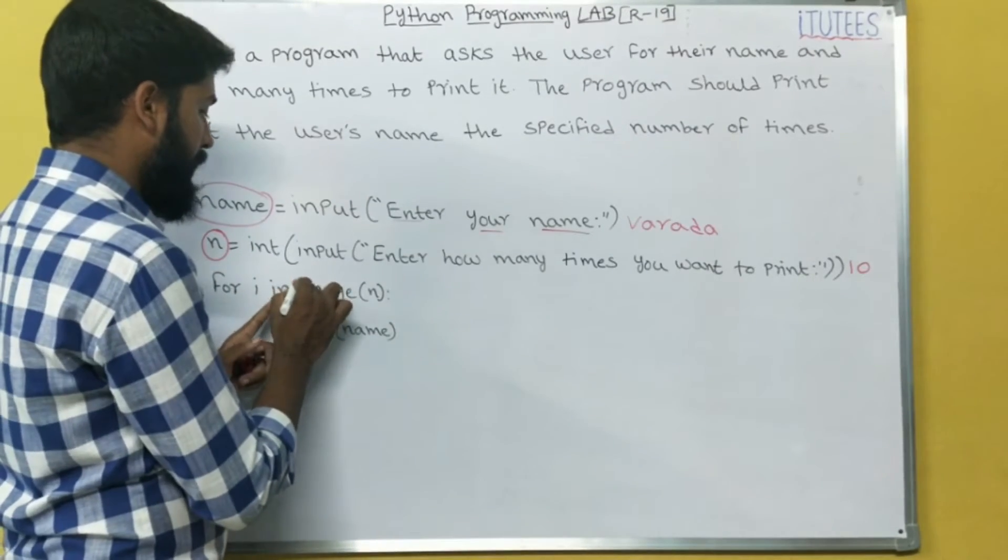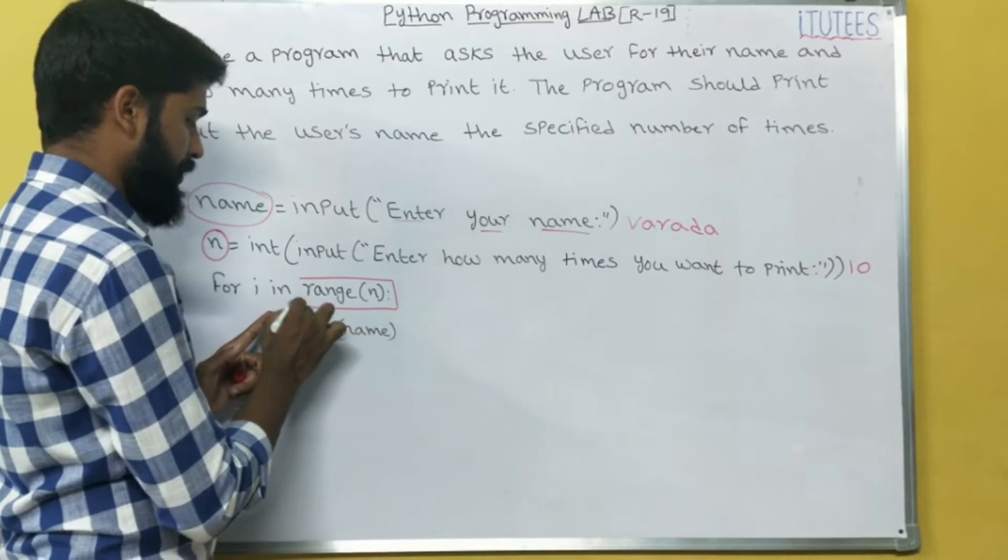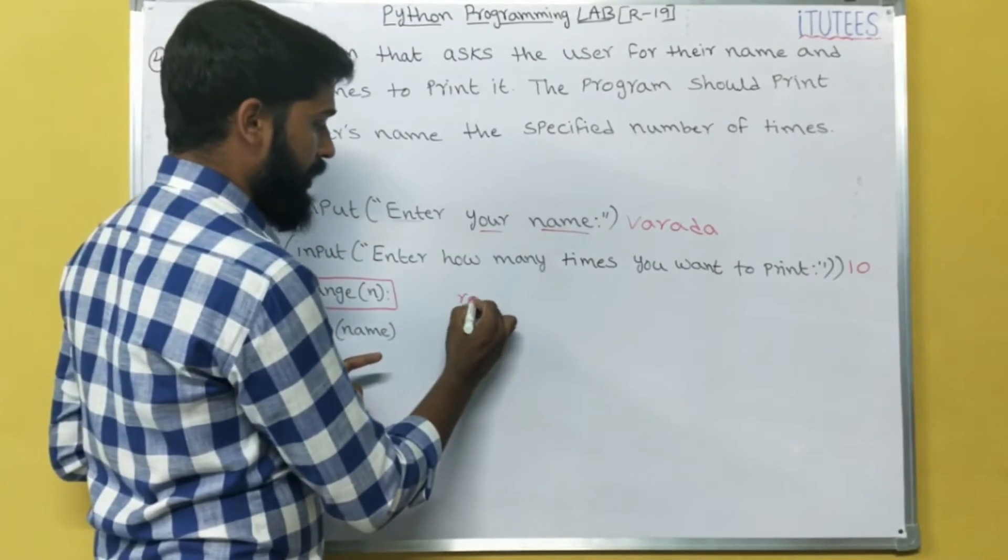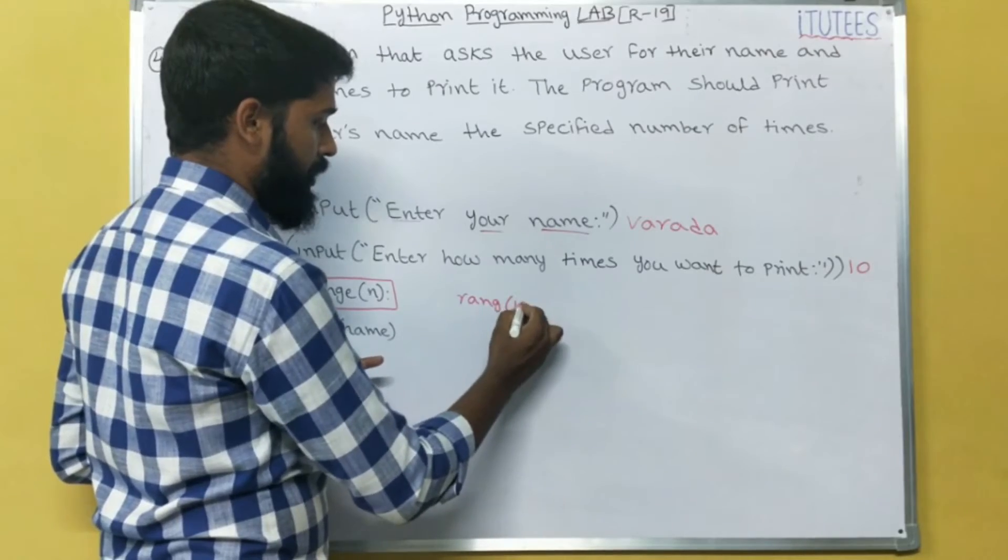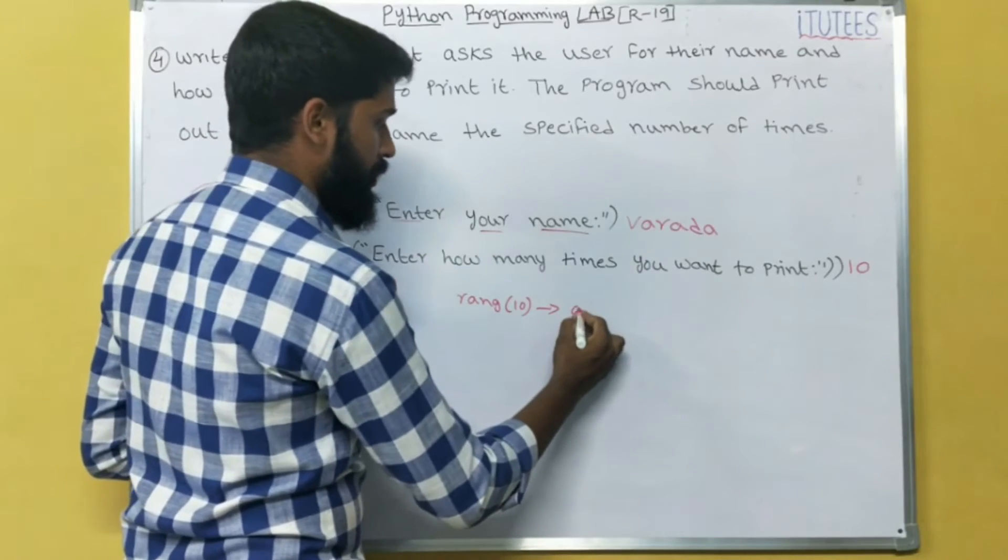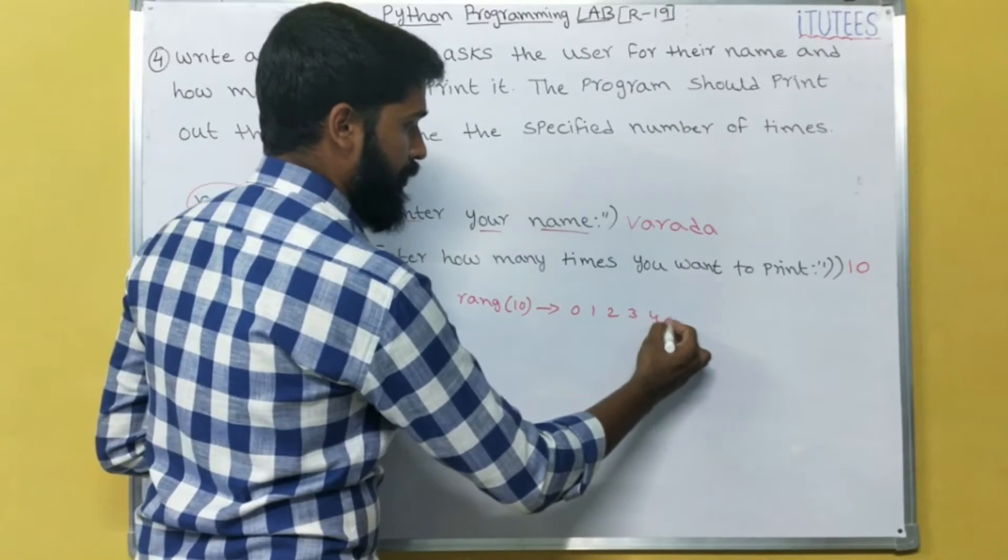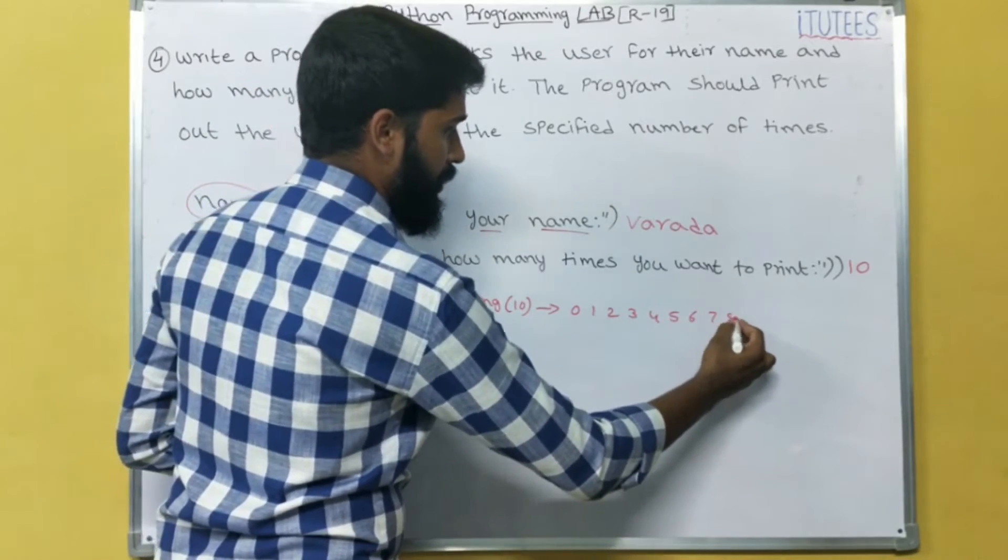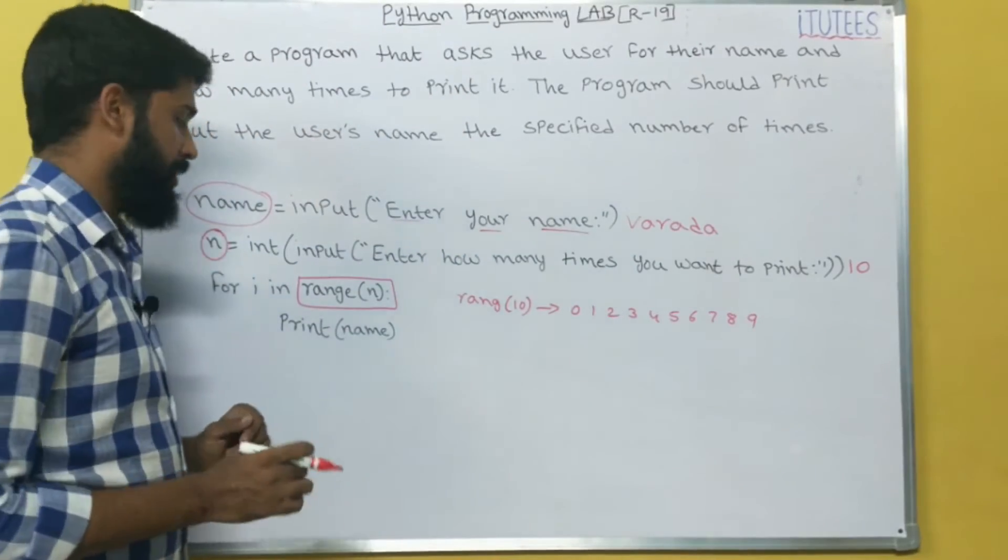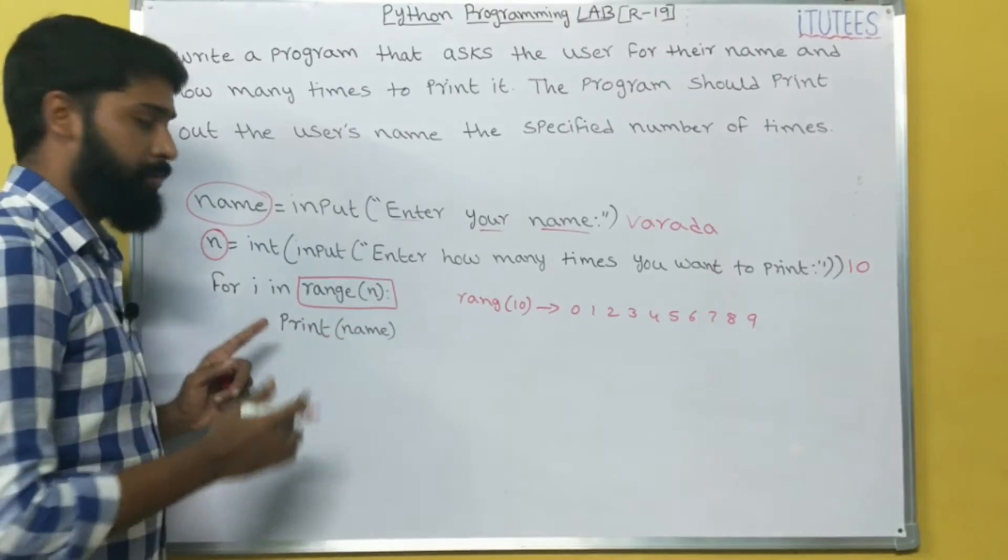Now, you can say that, based on the previous example, what is the range of n? Range of 10. So range of 10 means sequence of numbers 0, 1, 2, 3, 4, 5, 6, 7, 8, 9. That means how many numbers? 10 numbers. i in range of 10 numbers.